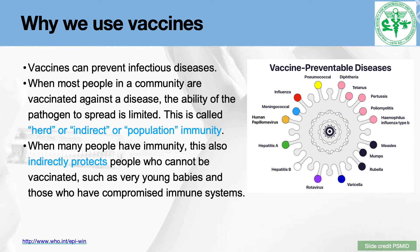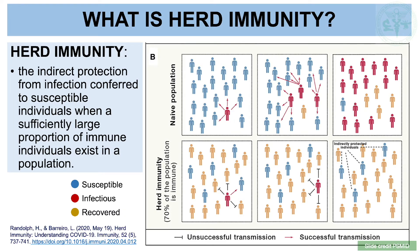When most people in a community are vaccinated against a disease, the ability of the pathogen to spread is limited. This is called herd immunity, indirect immunity, or population immunity. With herd immunity, people who cannot be vaccinated — such as very young babies and those with compromised immune systems, including our HIV patients with low CD4 counts — are also indirectly protected.